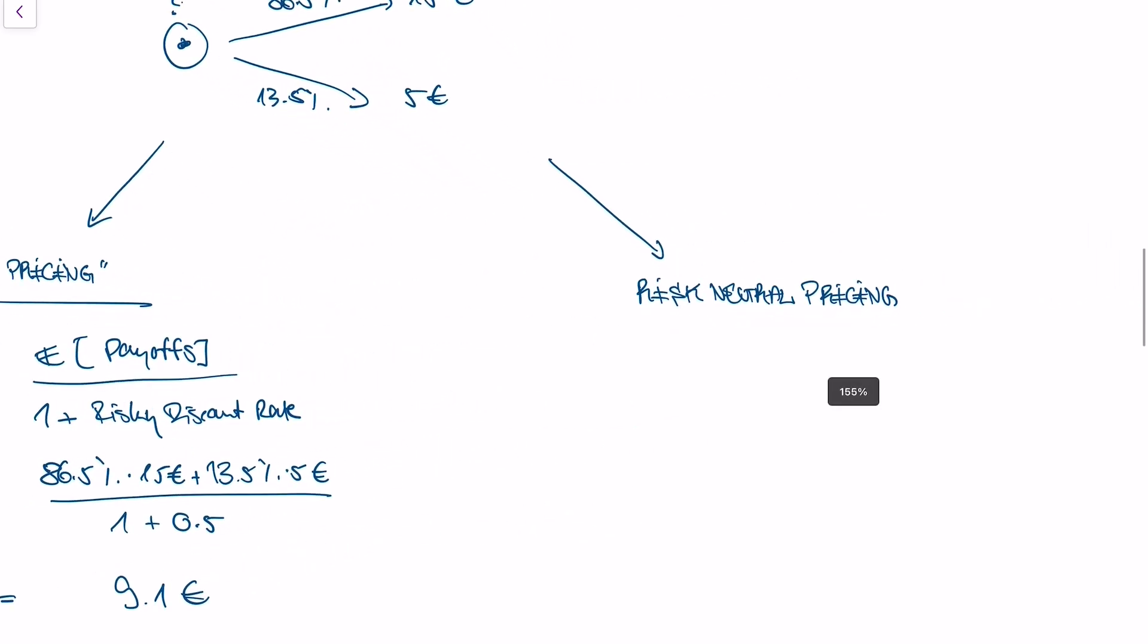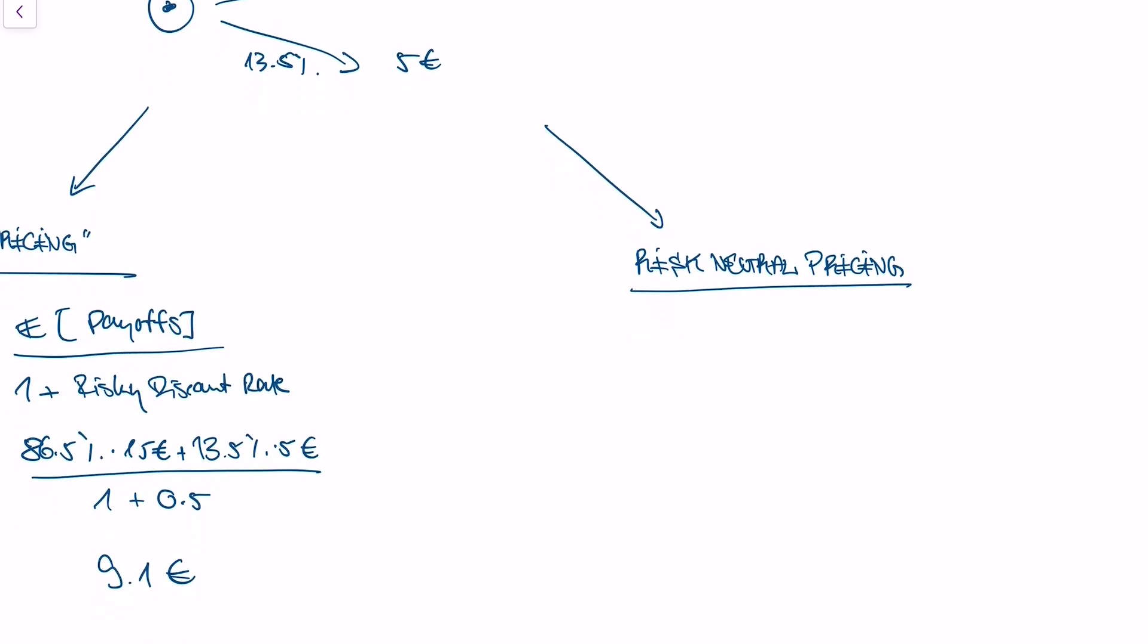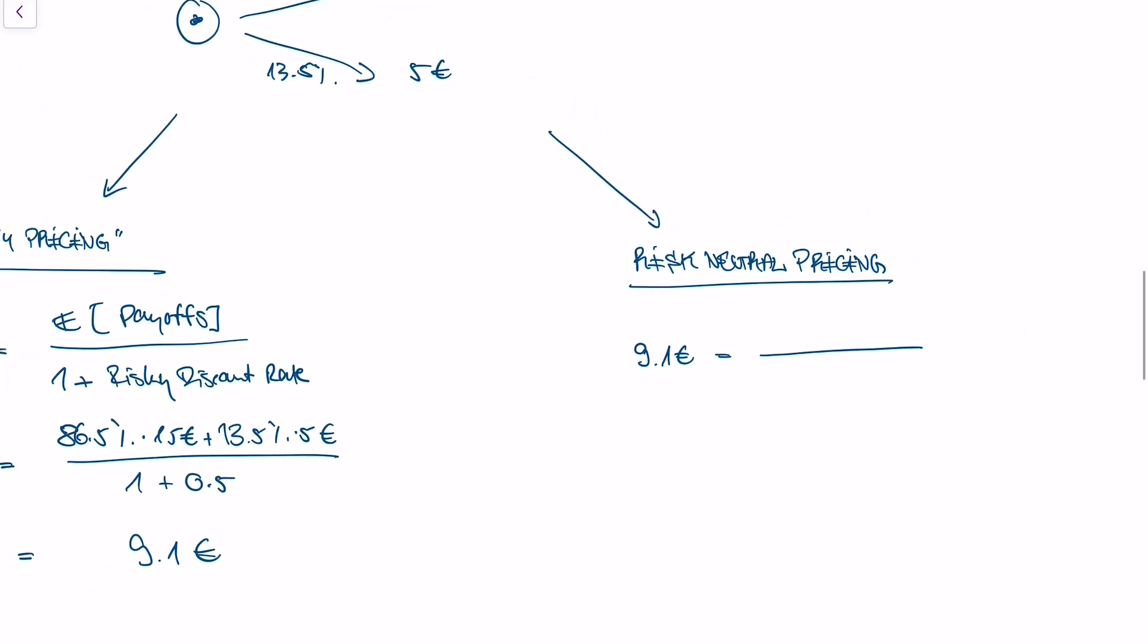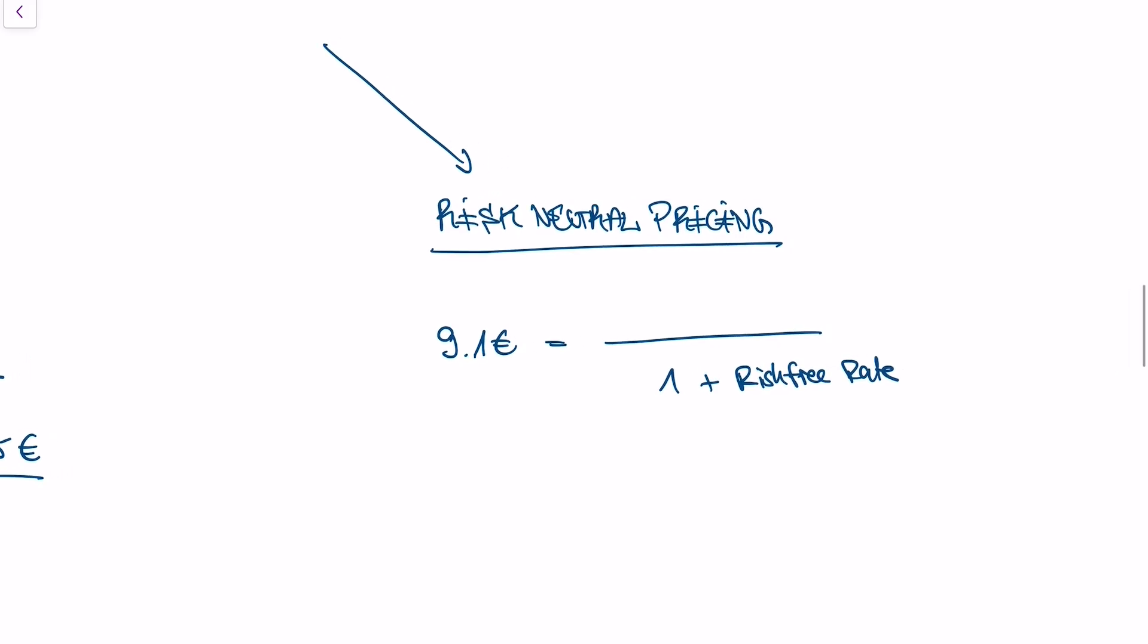The second approach to pricing is called risk neutral pricing. Here we make a little mathematical trick. We know now that our asset is worth 9.1 euros. We want to obtain this price by not using the risky discount rate, but by using the risk free rate. The risk free rate is the rate that you basically get when you lend money to the government. What we now use in our numerator is a so-called risk neutral expectation of the payoffs. What does this risk neutral expectation mean?